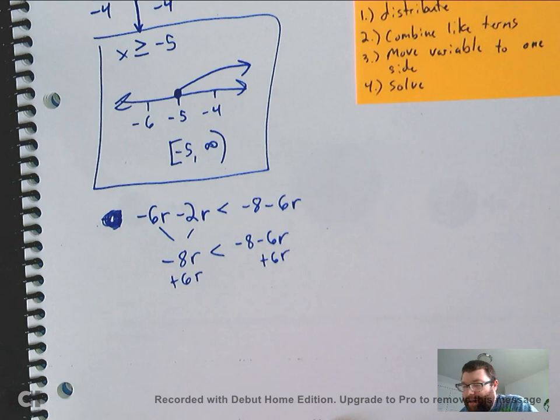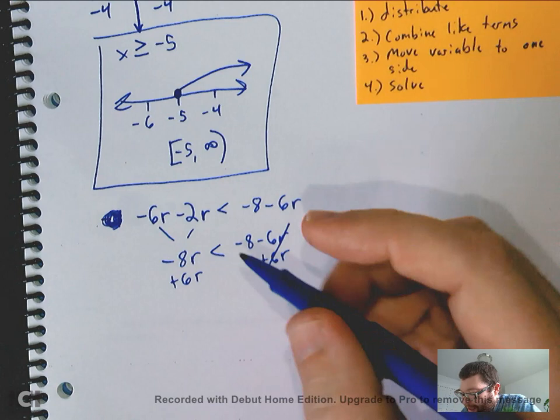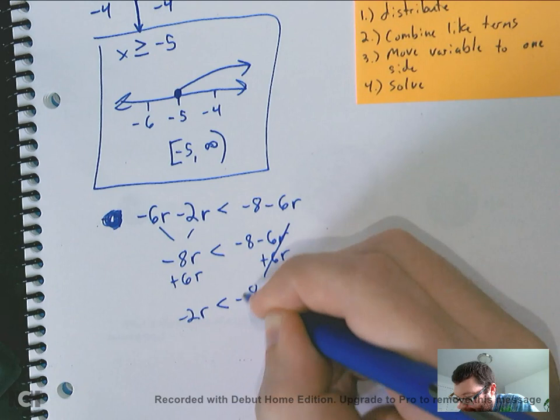Now, I'm not multiplying or dividing, right? So, that does not do anything to my inequality sign. But the negative 6r and positive 6r would cancel out there. And this would become negative 2r is less than negative 8.